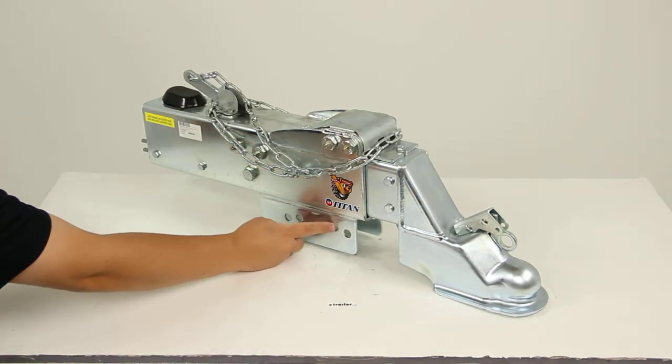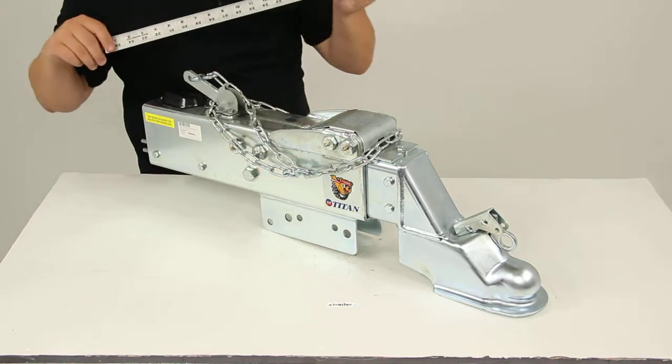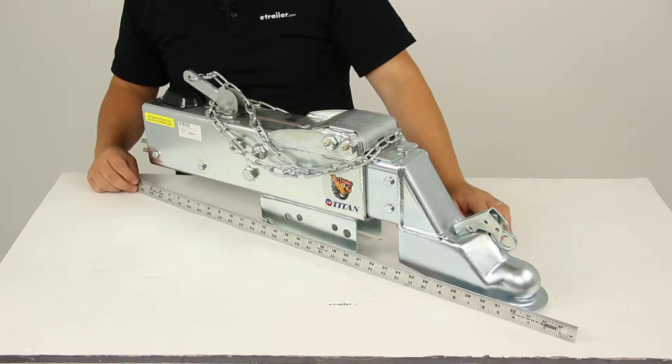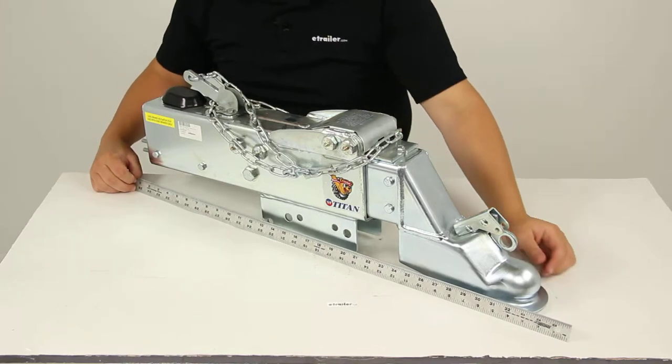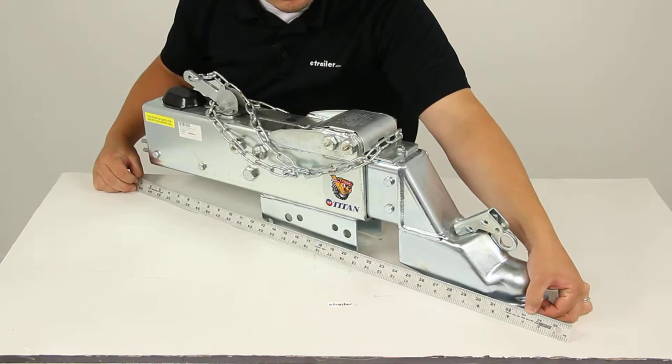The distance between these two holes center on center is going to be one inch. And then the overall length of this entire system is going to measure right around 33 inches.